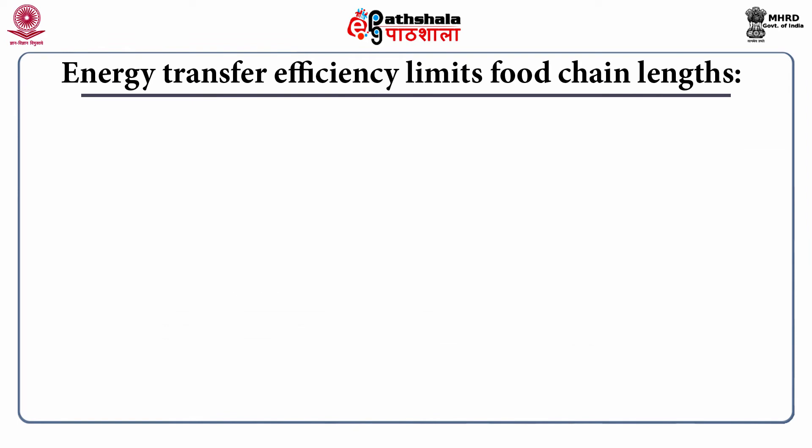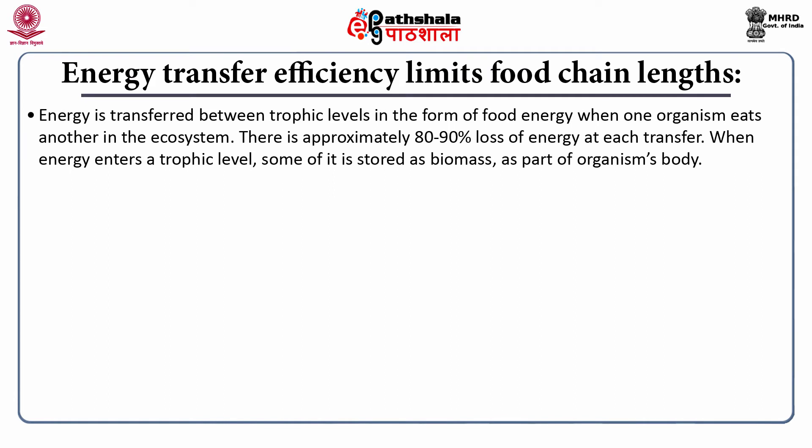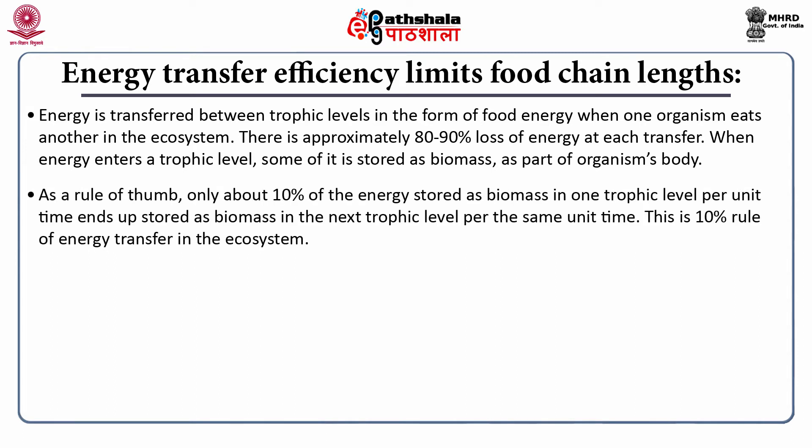Energy transfer efficiency limits food chain length. Energy is transferred between trophic levels in the form of food energy when one organism eats another in the ecosystem. There is approximately 80–90% loss of energy at each transfer. When energy enters a trophic level, some of it is stored as biomass as part of the organism's body mass. As a rule of thumb, only about 10% of energy stored as biomass in one trophic level per unit time ends up stored as biomass in the next trophic level. This is the 10% rule of energy transfer in the ecosystem.